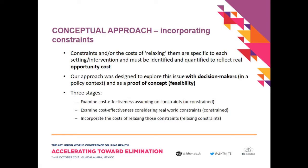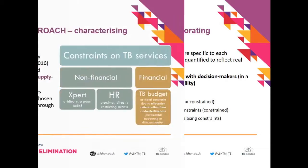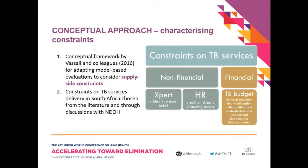The next presentation looks at the cost-effectiveness of TB control interventions in three steps: first, looking at unconstrained cost-effectiveness assuming no health system constraints; second, adding in constraints to see their effect on outcomes and costs; and third, quantifying how much it would cost to relax these constraints. As a proof of concept, we examined three potential health system constraints affecting interventions in South Africa, based on literature and discussion with National Department of Health officials.